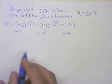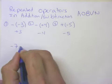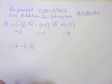When we see these in addition and subtraction, we'll see it in something like this. We'll see maybe negative seven minus negative three. All right, here's how I deal with this.